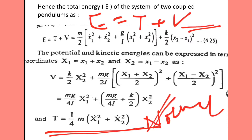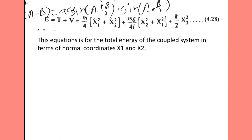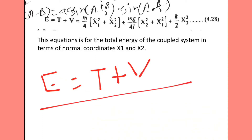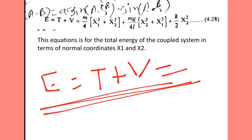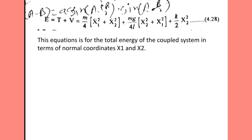These are the two expressions for kinetic energy and potential energy in terms of normal coordinates. Hence, the total energy E of the system, E = T + V in terms of normal coordinates, is given by the final equation: E = (M/4) * (x1_dot^2 + x2_dot^2) + (Mg / 4L) * (x2^2 + x1^2) + (k/2) * x2^2. This is the equation for total energy of the coupled oscillatory system in terms of normal coordinates x1 and x2.